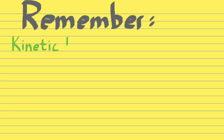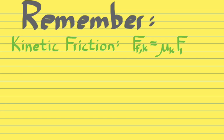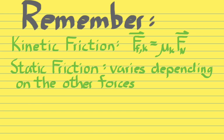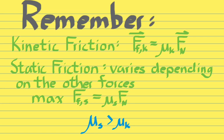Important things to remember: the kinetic friction force always equals mu_K times the normal force. Static friction varies depending on other forces, with a maximum value equal to mu_s times the normal force. The static coefficient of friction is always bigger than the kinetic coefficient. Don't forget how to draw free body diagrams, write net force equations, and analyze forces on an incline — all those concepts still apply. Next time in class we'll put all these things together.